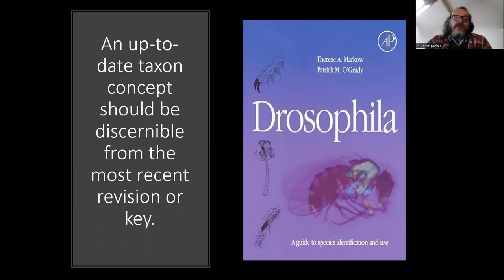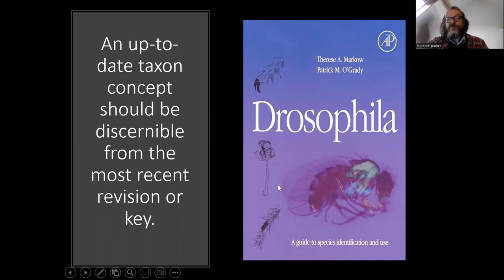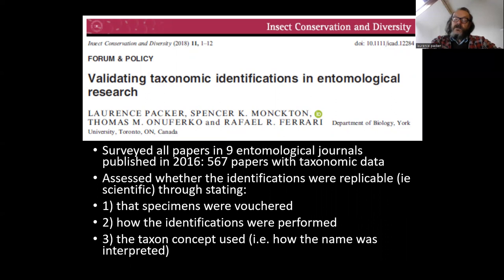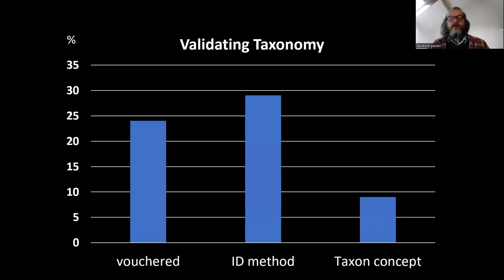You can get an up-to-date taxon concept for the organisms you're looking at in a recent revision, a key, or an identification guide — but these are things that should be cited. Getting back to the original assessment: were the specimens vouchered, did the authors say how the identifications were made, and did they say what taxon concept was used? The first result is particularly disappointing — people have been saying you've got to voucher your material for decades. Less than a quarter of the papers vouchered their material, less than a third said how they identified it, and less than 10% provided a taxon concept.